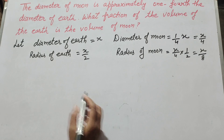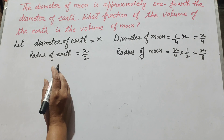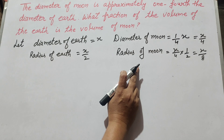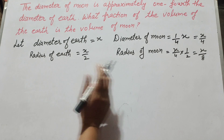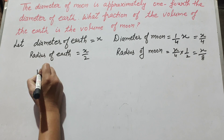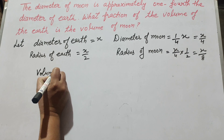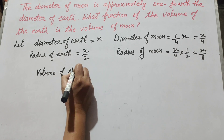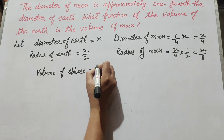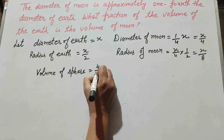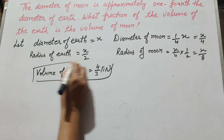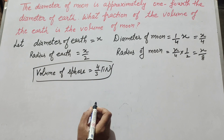Now we find the volume. We know the formula to find the volume of a sphere, because earth and moon are both in the form of a sphere. So we use the formula: volume of sphere equals 4 over 3 times pi times r cubed.